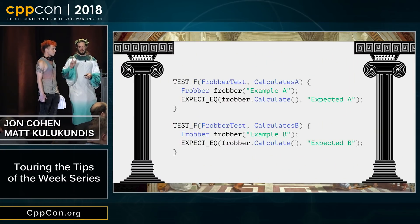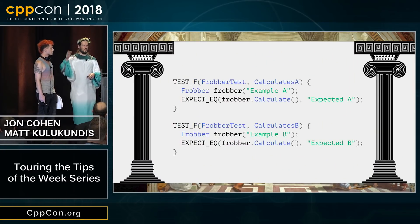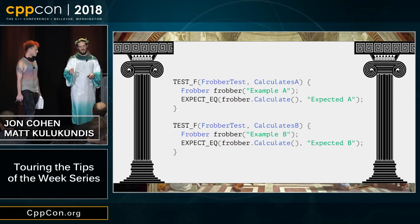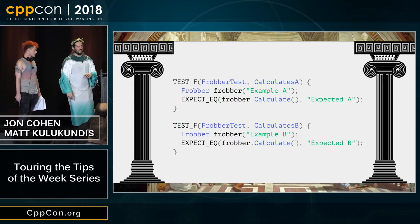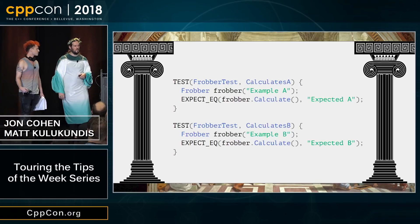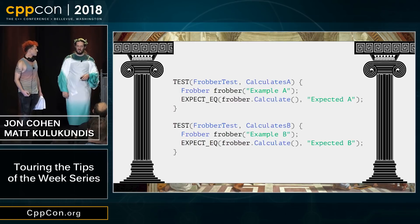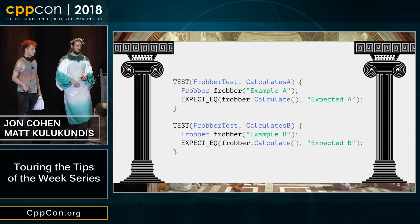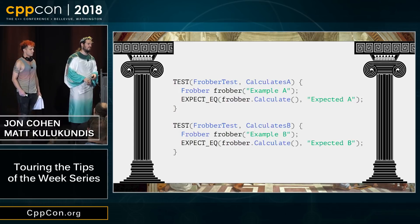In GUnit, you can have a fixture that has setup and teardown methods. And when you do that, you use TEST_F. And when you don't have all those setup and teardown methods, because you've extracted all the boilerplate to the true essence of your test, then you can just use the test directly.